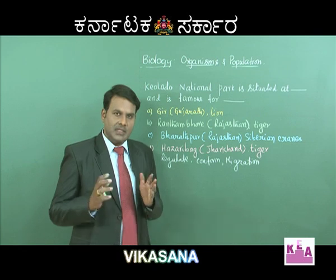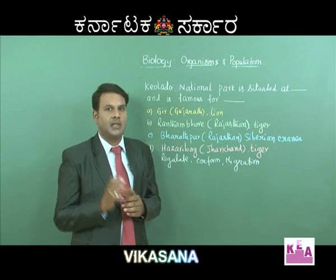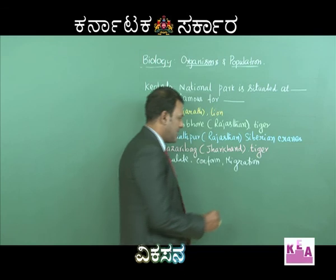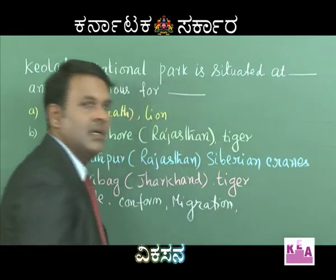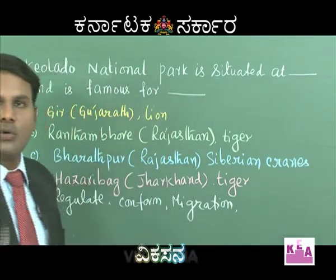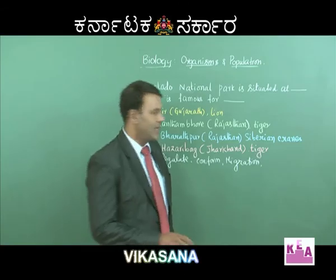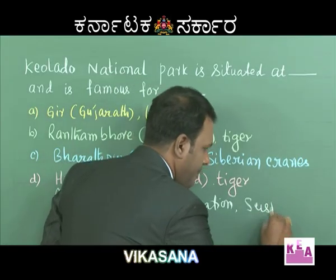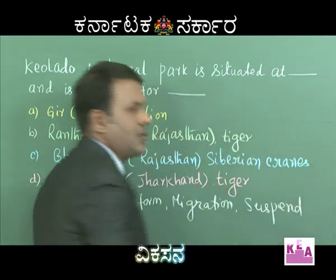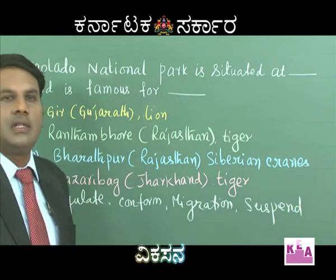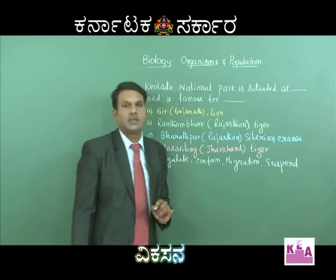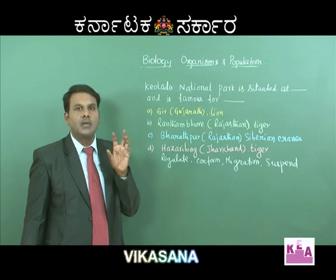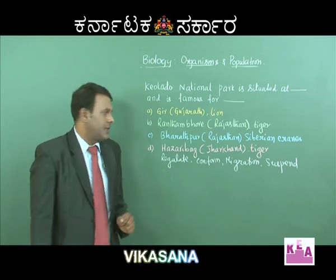Some organisms, particularly lower organisms like algae, suspend their physiological activity during unfavorable conditions — this is called suspend. These are the four different ways organisms respond to the habitat or environment: regulate, conform, migration, and suspend.